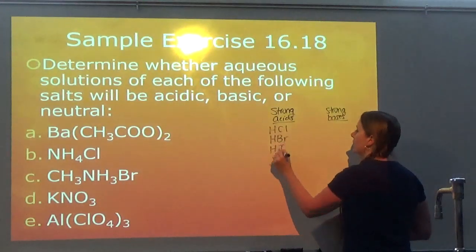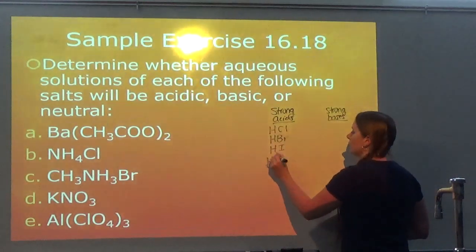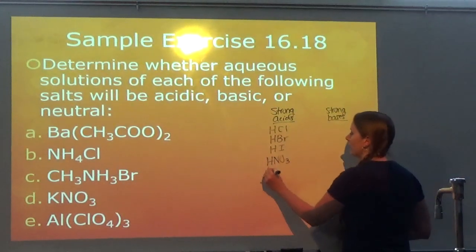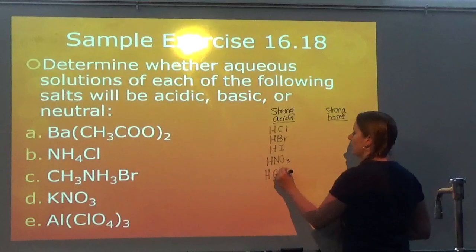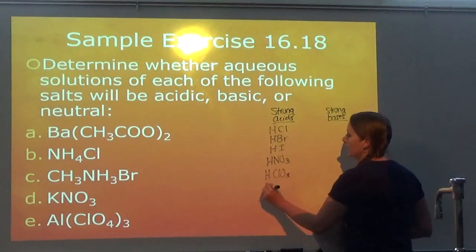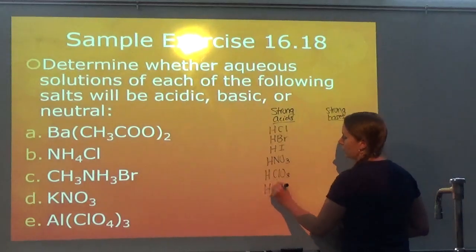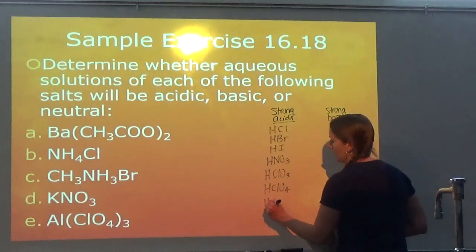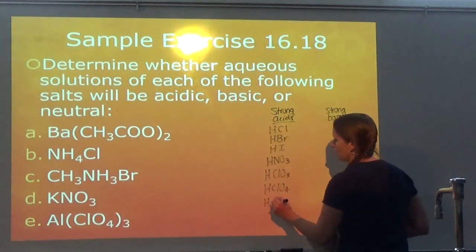The seven strong acids are: HCl, HBr, HI, HNO₃, HClO₃, HClO₄, and H₂SO₄.